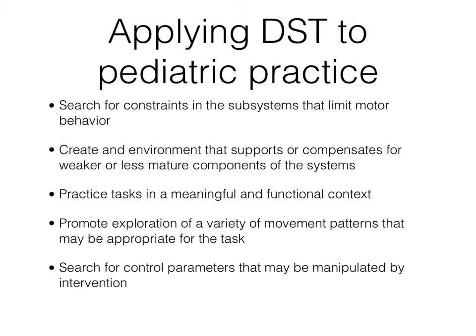Finally, the therapist searches for what we call control parameters that may be manipulated by intervention. Going back to those constraints in the subsystems — decreased strength, decreased balance, decreased range of motion — physical therapists will search for control parameters: things we can do to increase strength, increase balance, improve range of motion. Using the dynamical systems theory as a theoretical framework, the physical therapist assesses and treats more than just the child. We think about the child, we think about the environment, and we also think about the task itself. All three can become targets of intervention, which really expands us beyond the traditional model of only treating the child's body functions and structures.